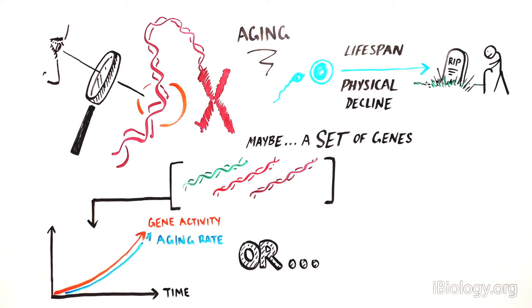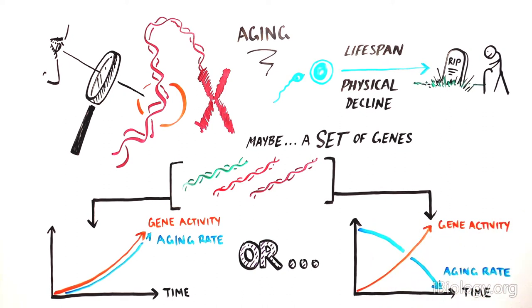Or perhaps it's the other way around. Maybe these genes negatively regulate aging. When they are active, aging may take place more slowly.